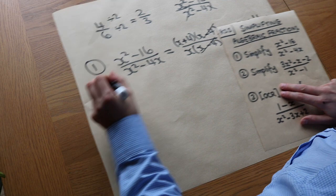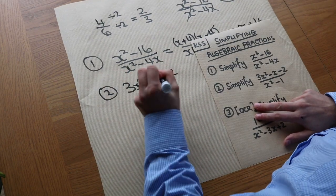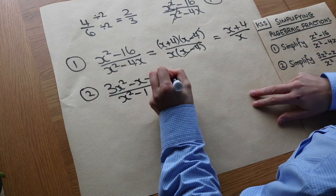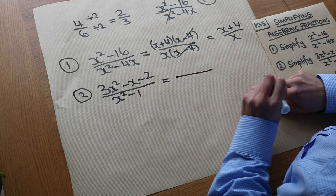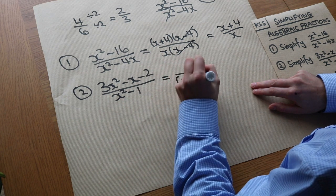What about 2? We want to simplify 3x squared minus x minus 2 over x squared minus 1. Now again the bottom, which is the easier one to factorise, that's the difference of two squares, x plus 1 times x minus 1.